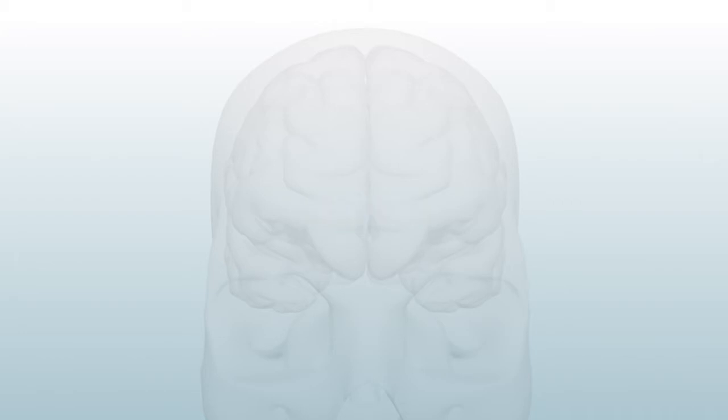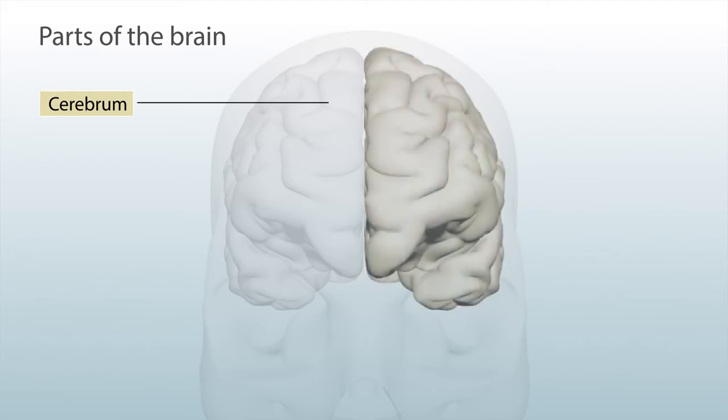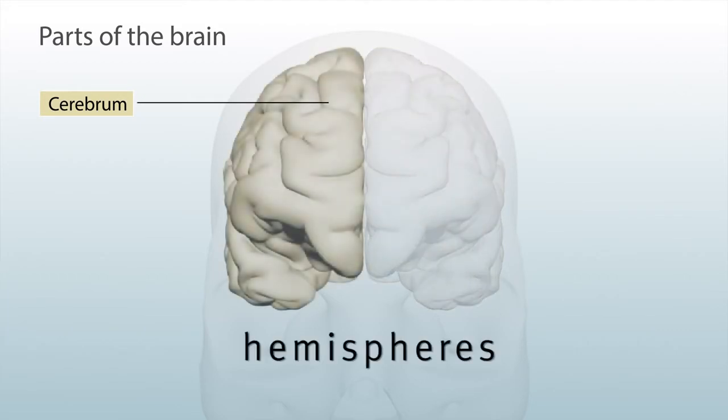The largest part is the cerebrum, which is divided into two sides called hemispheres, just like the Earth.